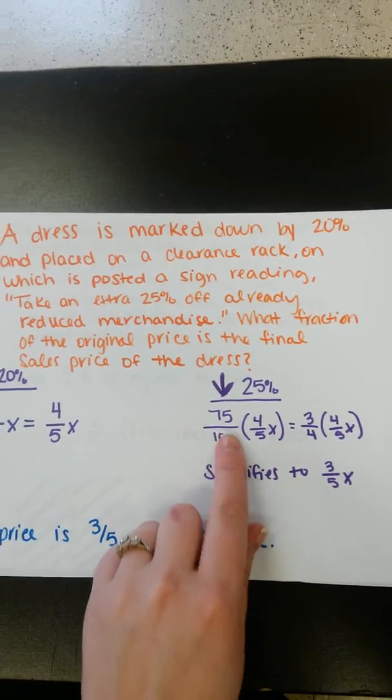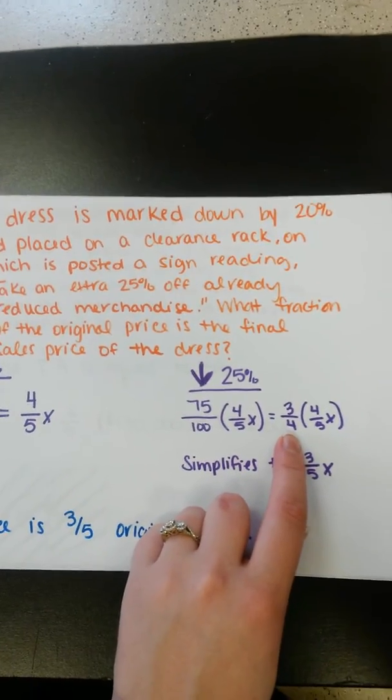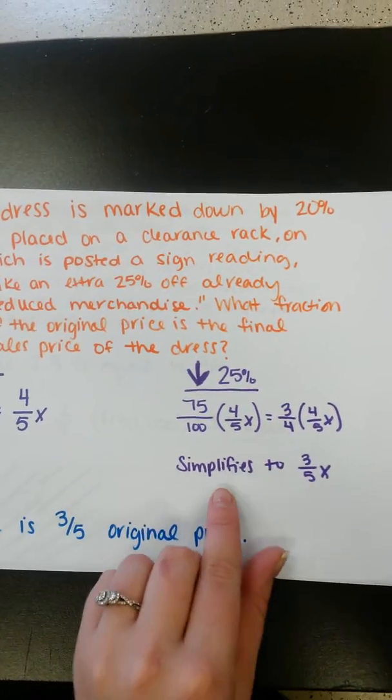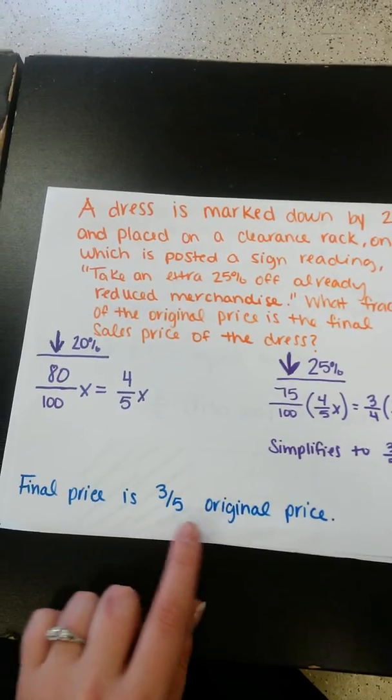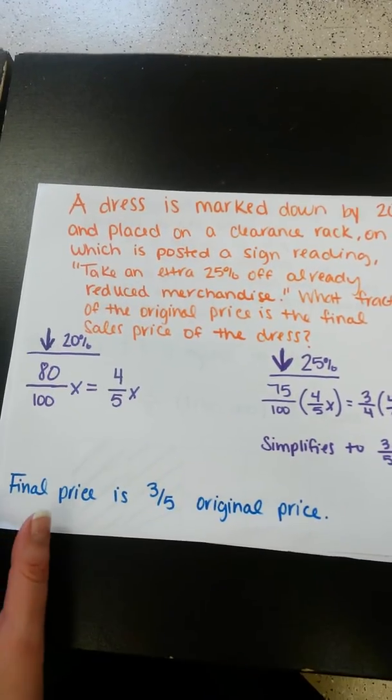So we're going to multiply that by our already reduced price, which is like 75 over 100 is reduced to 3 fourths. And multiply that simplifies to 3 fifths X. So the final price is 3 fifths of the original price.